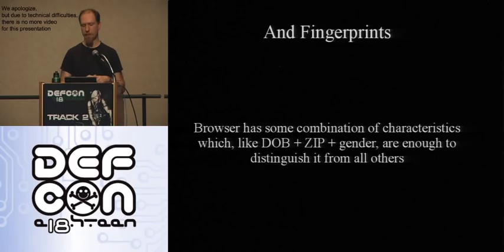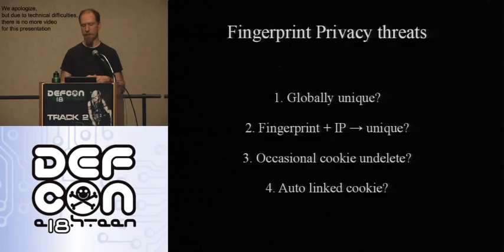Fingerprints are like Latanya Sweeney's example: tracking someone with seemingly inane facts like zip code and date of birth. It turns out that the characteristics web browsers have — like the browser version, operating system, and so on — combine together in the same way and perhaps make your browser unique. There are different degrees of uniqueness: you might have complete global uniqueness, where your specific browser in the entire world can be recognized and tracked whenever the site sees it.